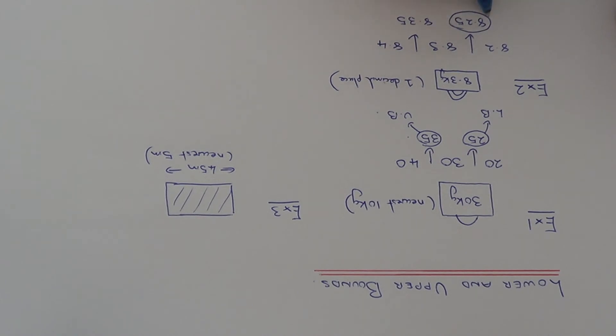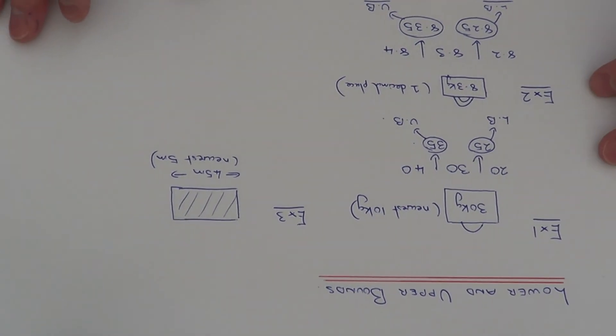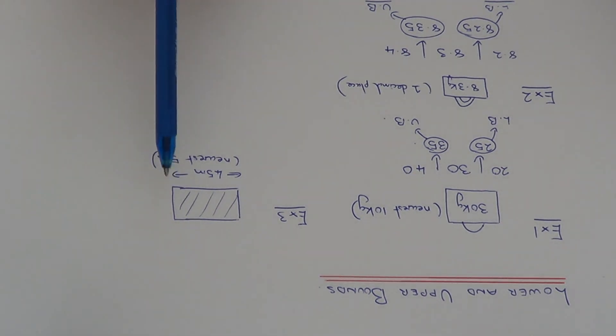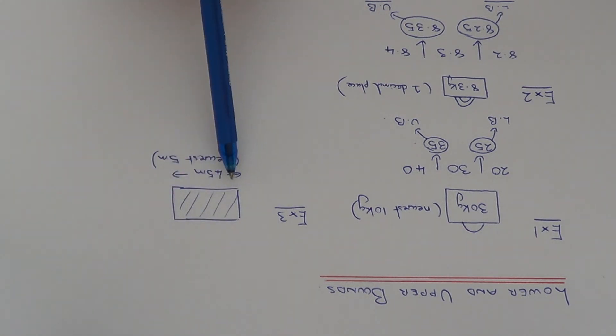So this will be our lower bound and this will be the upper bound. OK, so let's do one last example. This time we've got something a little bit different. So this time we have a field and the length of the field is 45 metres and this has been rounded to the nearest 5.